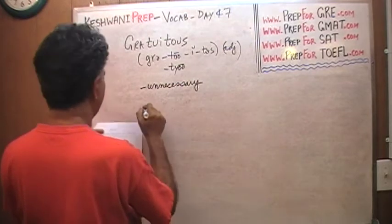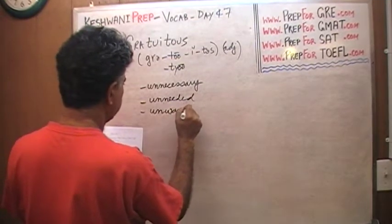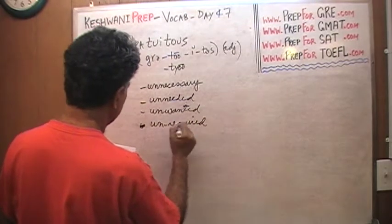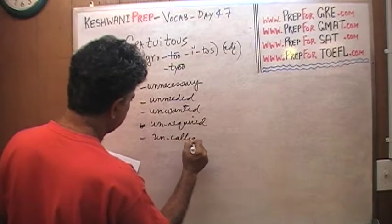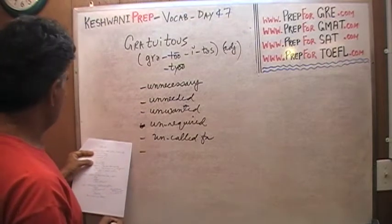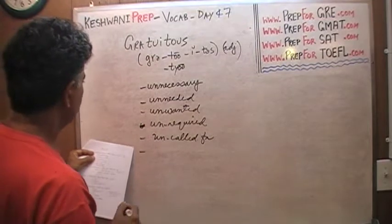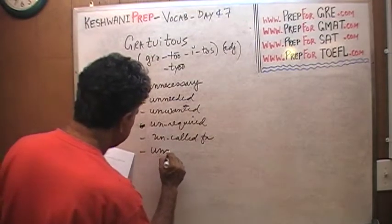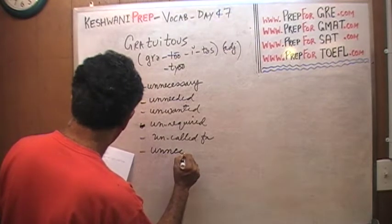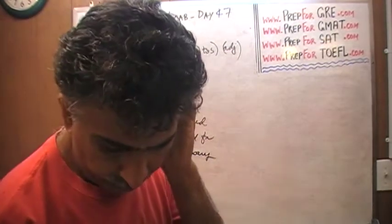Gratuitous means unnecessary, unneeded, unwanted, unrequired, uncalled for, unwarranted. I'm going to read all of them one more time: unnecessary, unneeded, unwanted, unrequired, uncalled for.